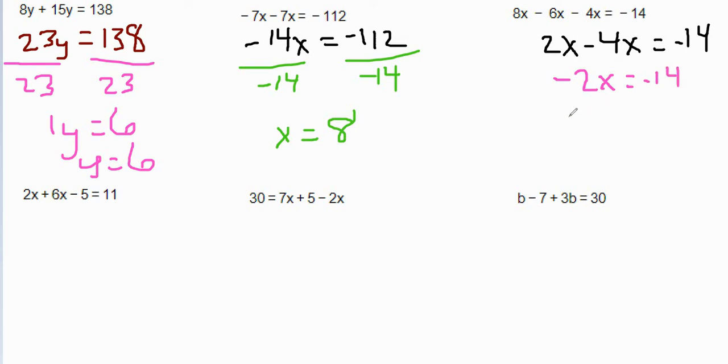Then we can divide both sides by negative 2. And this time I'm going to use the obelus. I typically don't do that, but let's use the obelus. Divide both sides by negative 2, and we have x equals 7 as our answer.